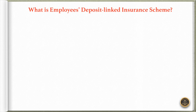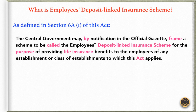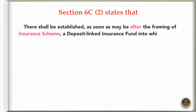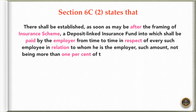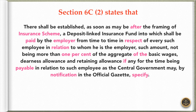The next question is: what is the Employees Deposit Linked Insurance Scheme? As defined in Section 6C of this act, the central government may, by notification in the official Gazette, frame a scheme to be called the Employees Deposit Linked Insurance Scheme for the purpose of providing life insurance benefits to the employees of any establishment or class of establishments to which this act applies. Further, Section 6C states that there shall be established, as soon as may be after the framing of the insurance scheme, a deposit-linked insurance fund into which shall be paid by the employer from time to time in respect of every such employee in relation to whom he is the employer.